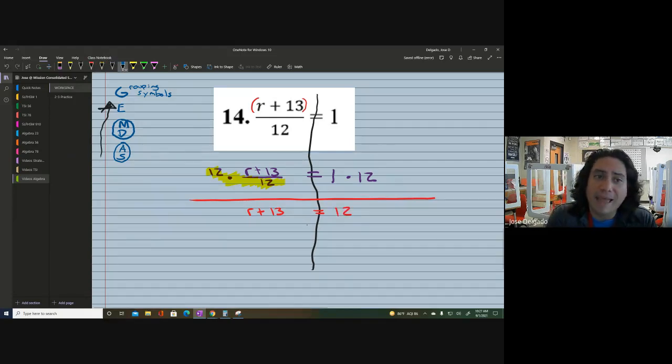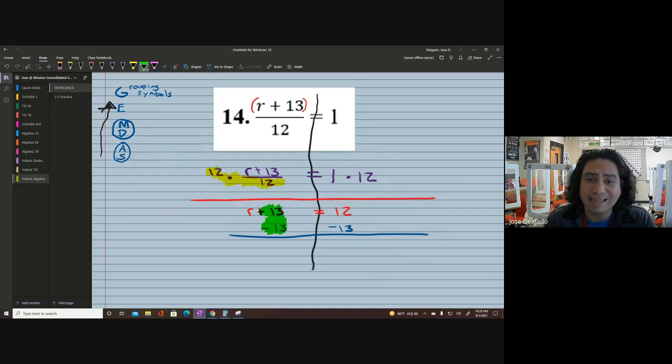Now we're getting closer. We continue by bringing the left side of the equation down. We have R plus 13, equal sign in the middle. Right side of the equation is 1 times 12. I was going to say 1 plus 12, but I would have done that wrong. It's 1 times 12 and we end up with 12 here.